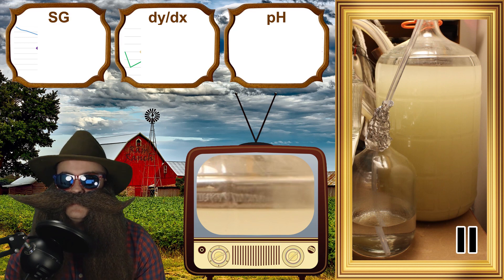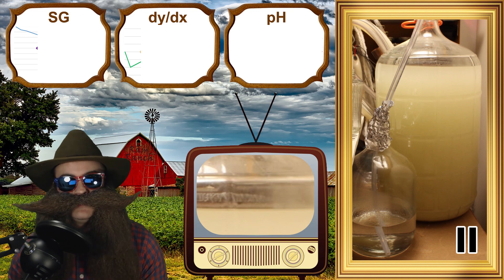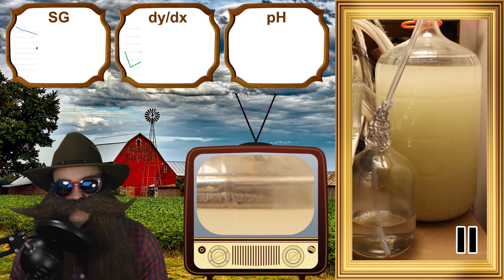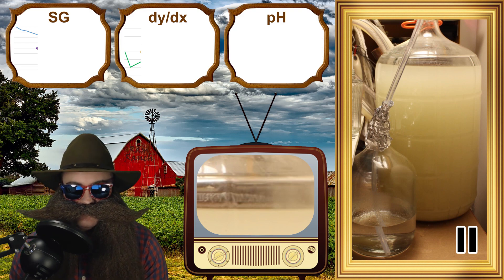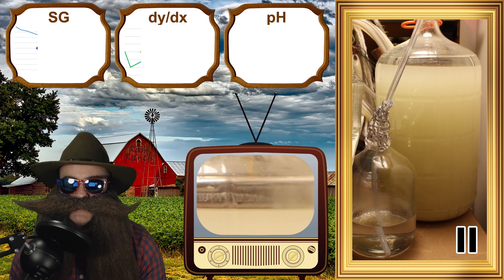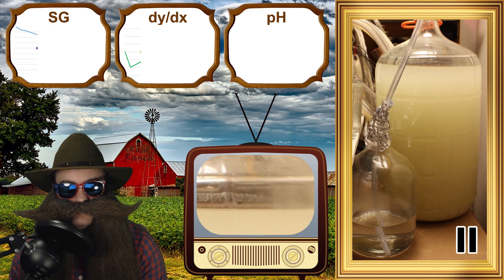I thought that spreading out the yeast additions like that would show the difference between the Home Distiller Forum recommendation and the Beersmith recommendation. I thought that the optimal pitch rate would be somewhere between those two recommendations. At the same time, I dumped in the remainder of the 12 grams of superfood yeast nutrient. I didn't add any more yeast nutrient moving forward.